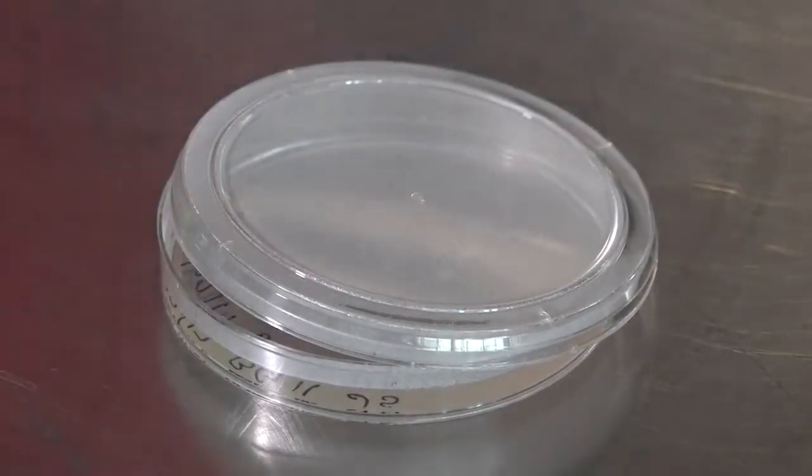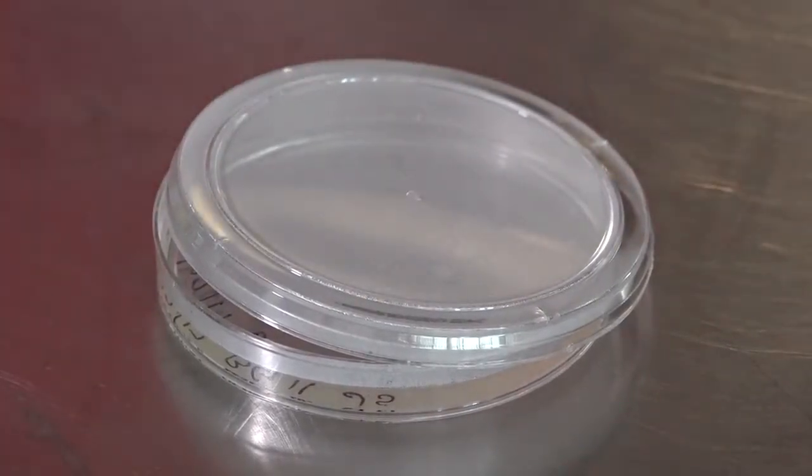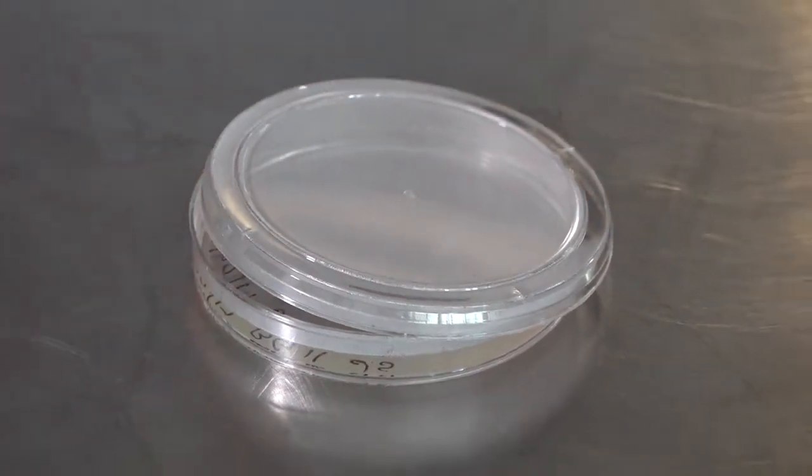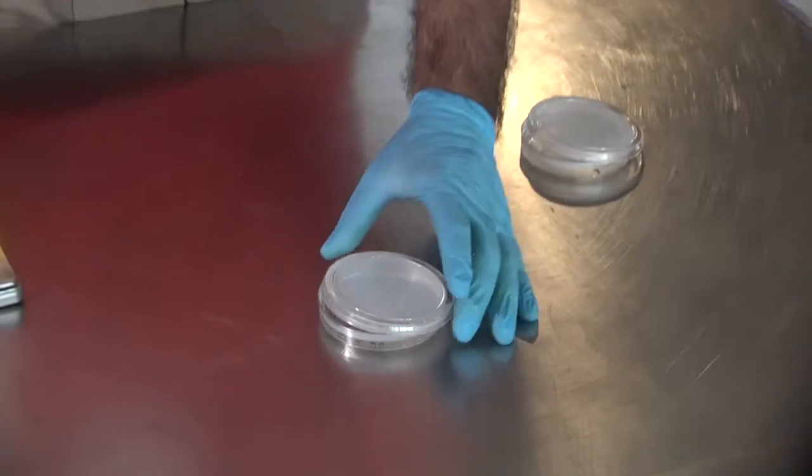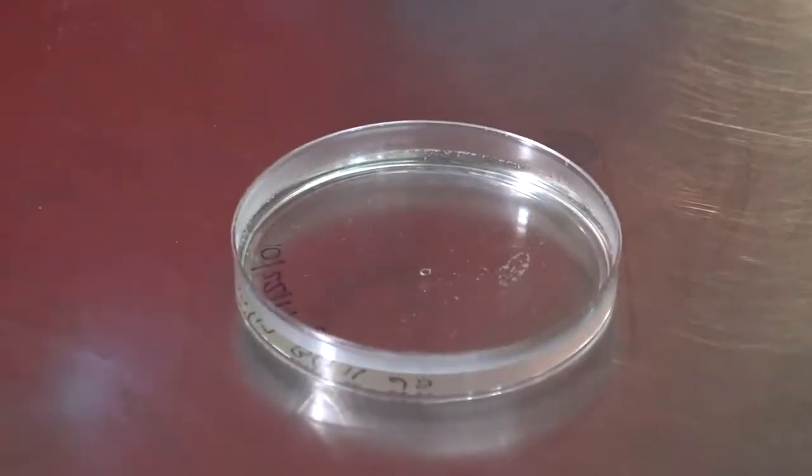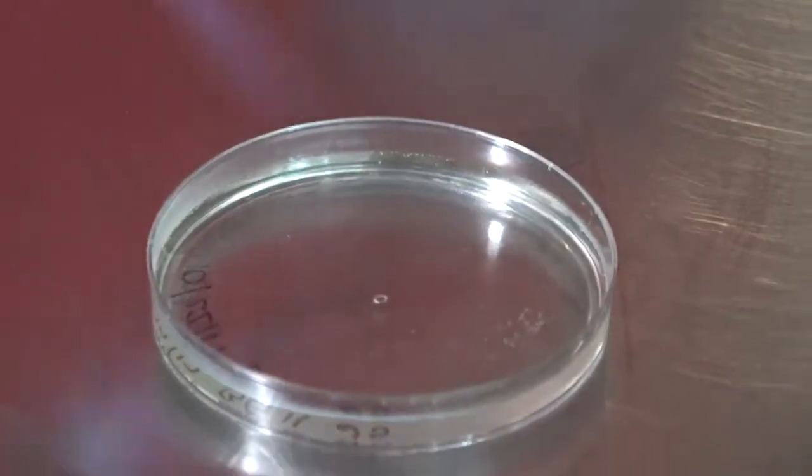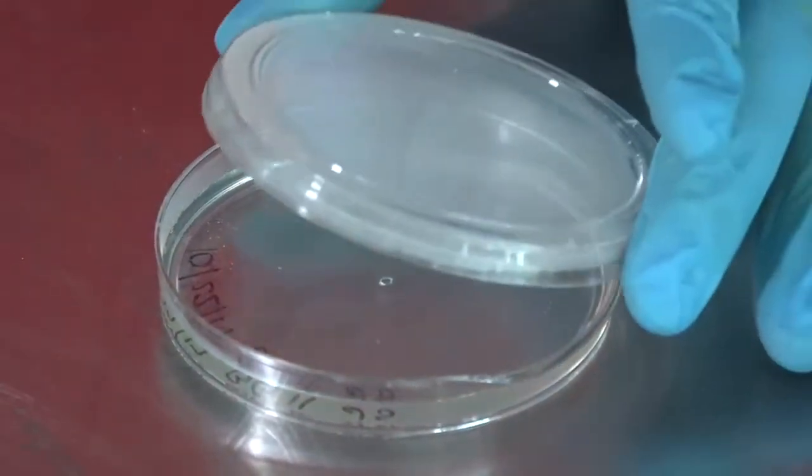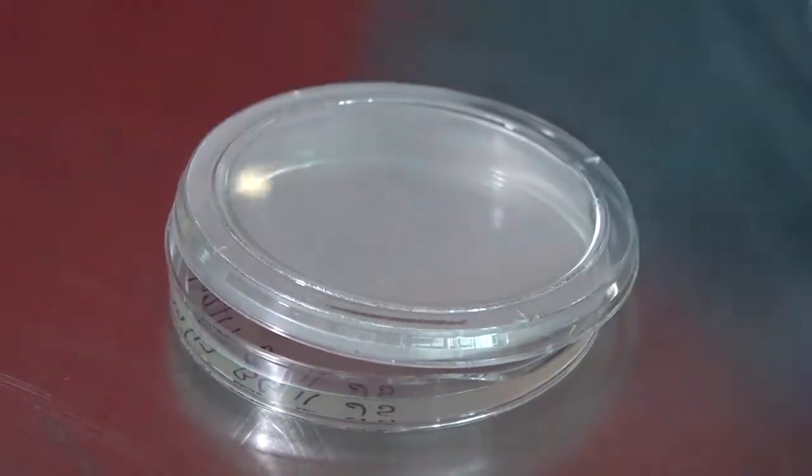So we do what is called flaming the surface. Now most labs will use a Bunsen burner, but since this is a technology lab, we have torches. What you do is you take the top, very quickly run the flame over it, getting rid of all the bubbles. Don't melt the plastic. Put the lid back.